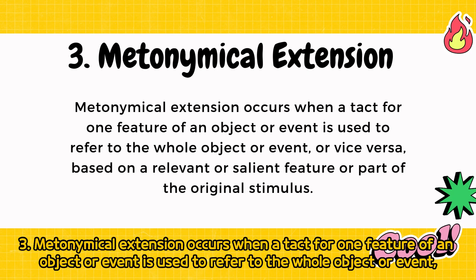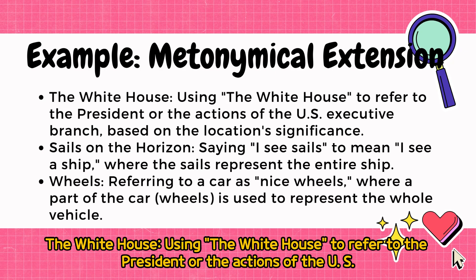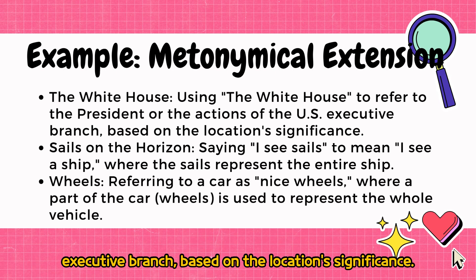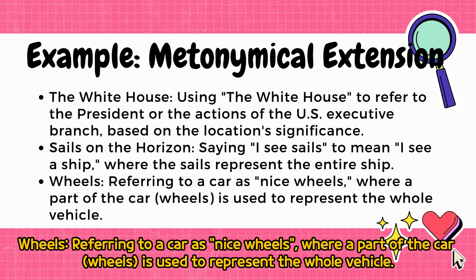3. Metonymical extension occurs when a tact for one feature of an object or event is used to refer to the whole object or event, or vice versa, based on a relevant or salient feature of the original stimulus. Examples: The White House — using 'the White House' to refer to the President or the actions of the U.S. Executive branch. Sails on the horizon — saying 'I see sails' to mean 'I see a ship,' where the sails represent the entire ship. Wheels — referring to a car as 'nice wheels,' where a part of the car is used to represent the whole vehicle.